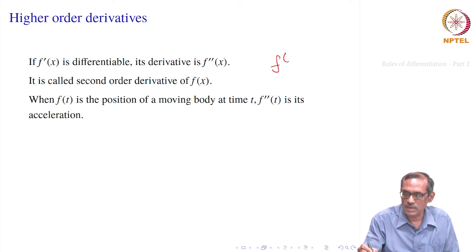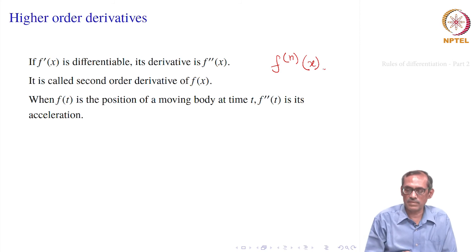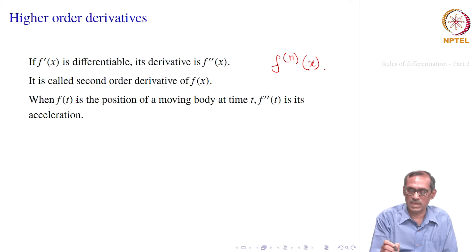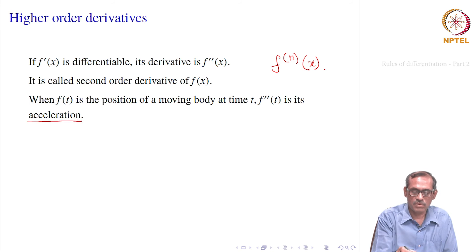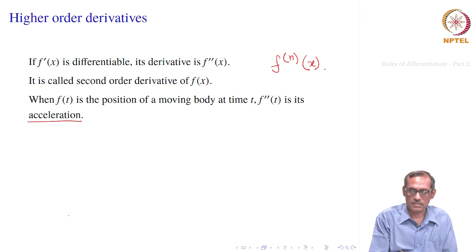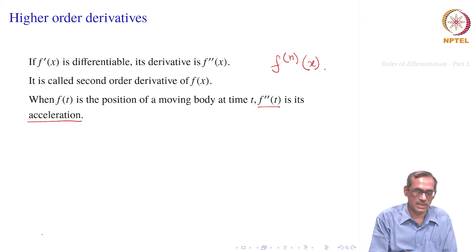So what does the second derivative mean physically? Suppose t is time and f(t) is the displacement of a body. Then f′(t) gives the speed at a point, and f″(t) will be its rate of change — it is really the acceleration. It takes direction into account as well, but in the absence of any directional term we are just writing acceleration. So f″(t) can be thought of as acceleration.